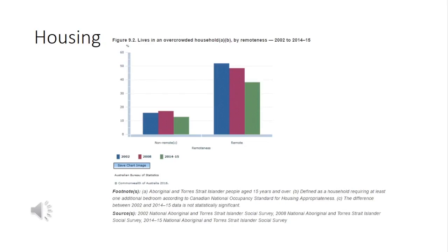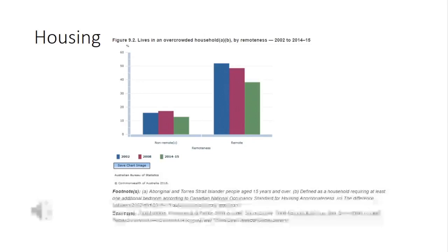Housing is another major issue faced by Indigenous Australians. While a house with no more than two adults per bedroom and access to working facilities allows a household to function effectively, overcrowding and the absence of working facilities such as running water and a working stove pose serious health risks. The 2014–2015 NATSISS found one in five Aboriginal and Torres Strait Islander people aged 15 years and over were living in a home that was overcrowded.